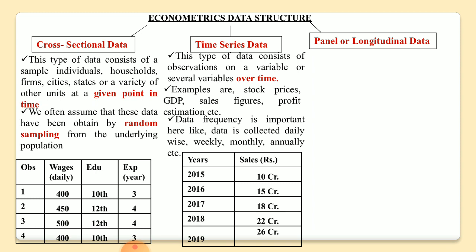This is an example of a time series data set. Here, the sales figure of a single company has been collected over a period of time — from 2015 to 2019, that is five years of data for one company. Similarly, we can collect data on that company's profit for the last ten years. This is what constitutes a time series data set.